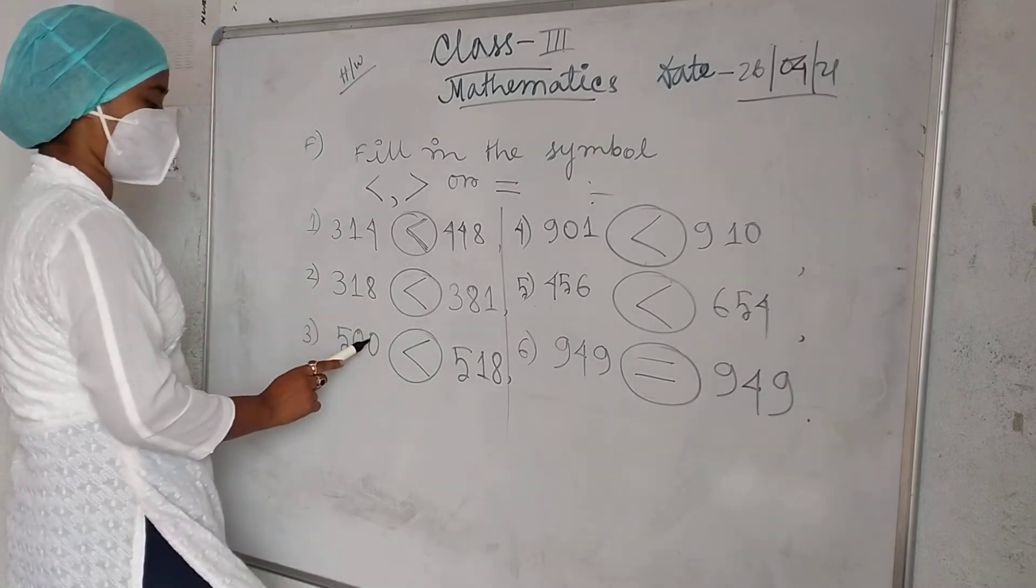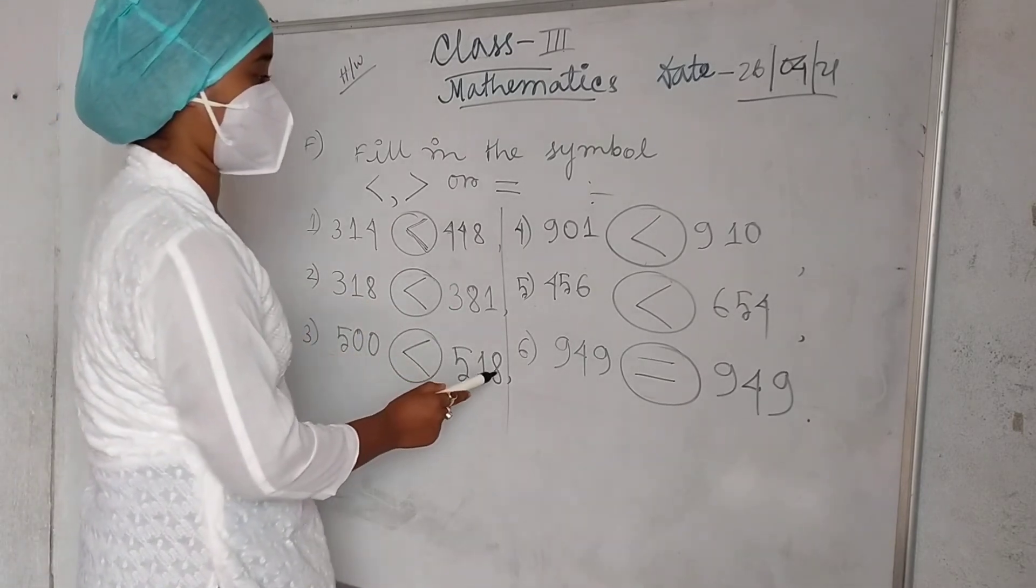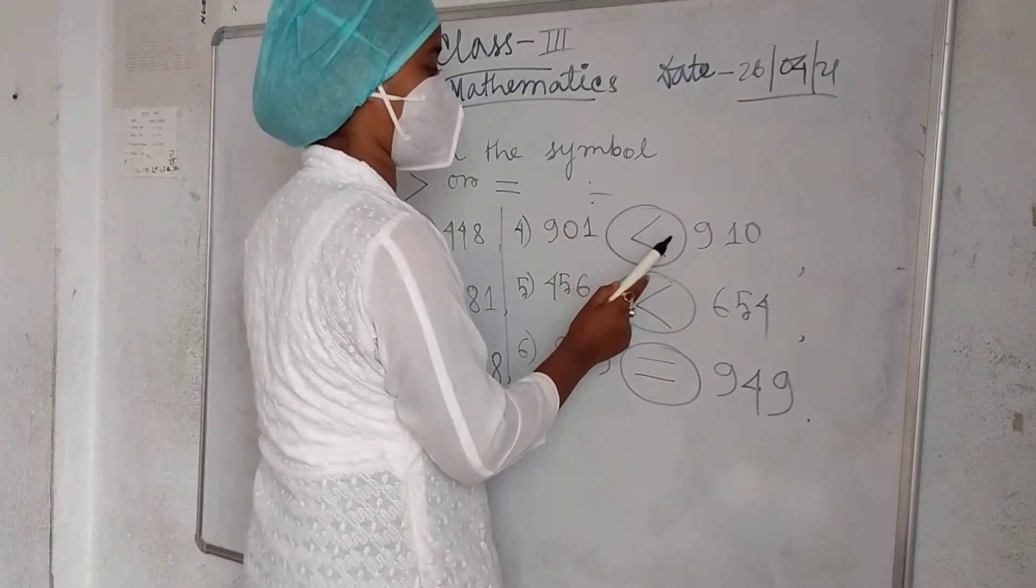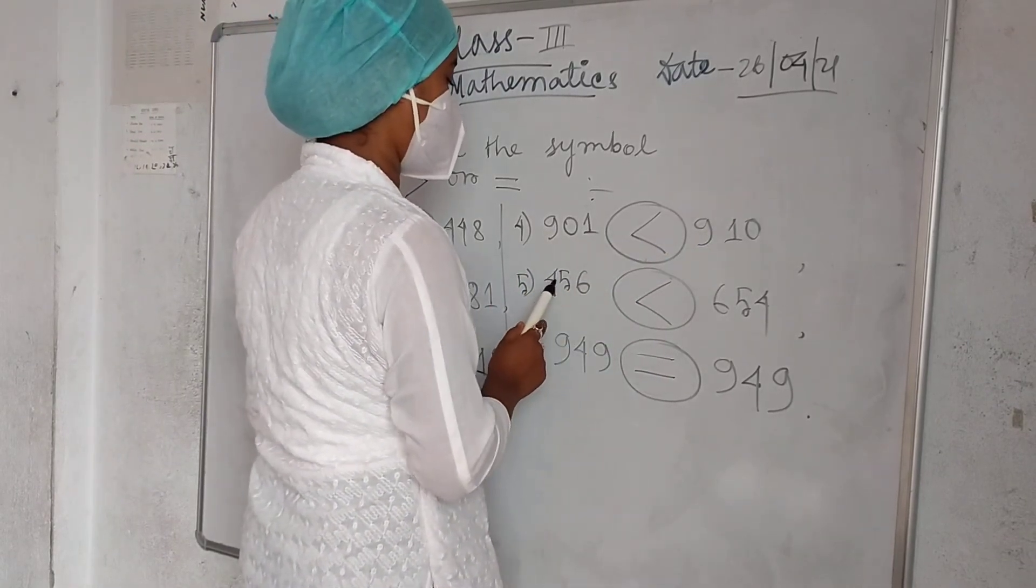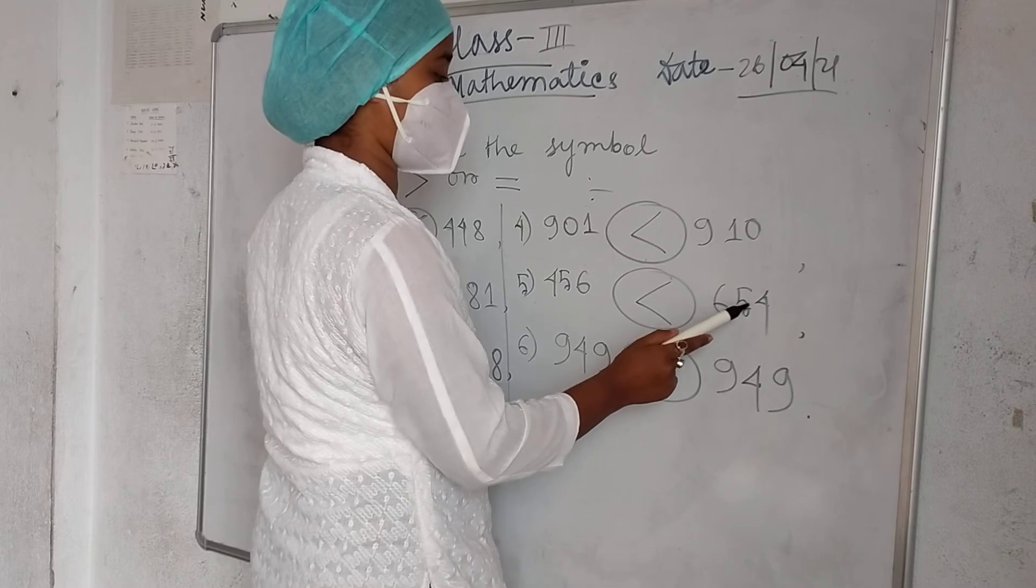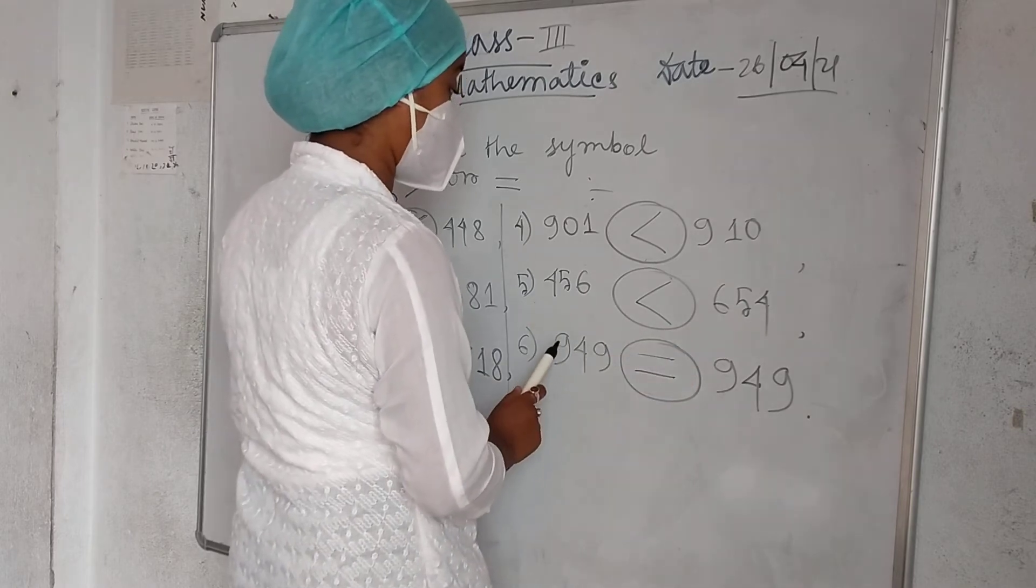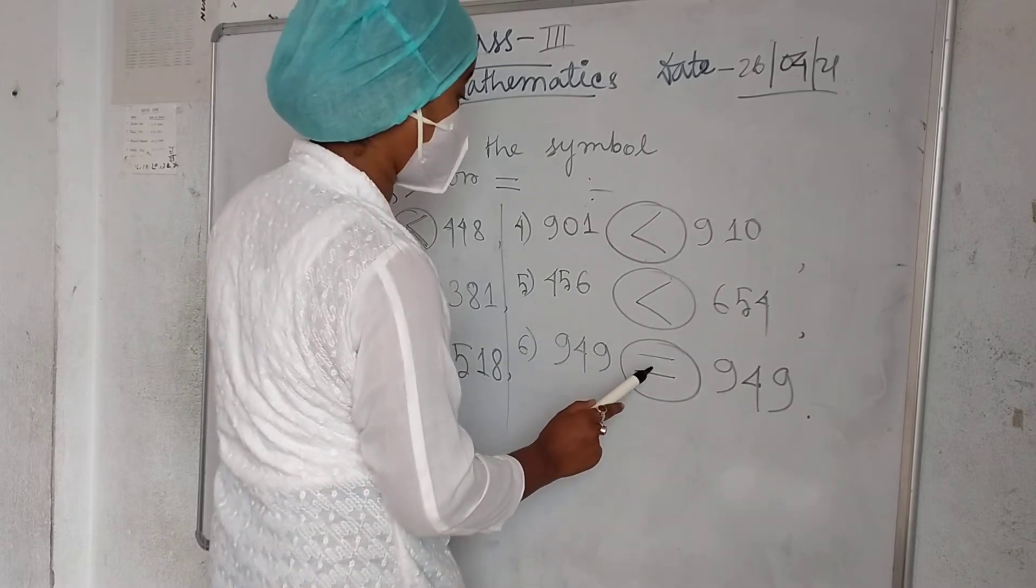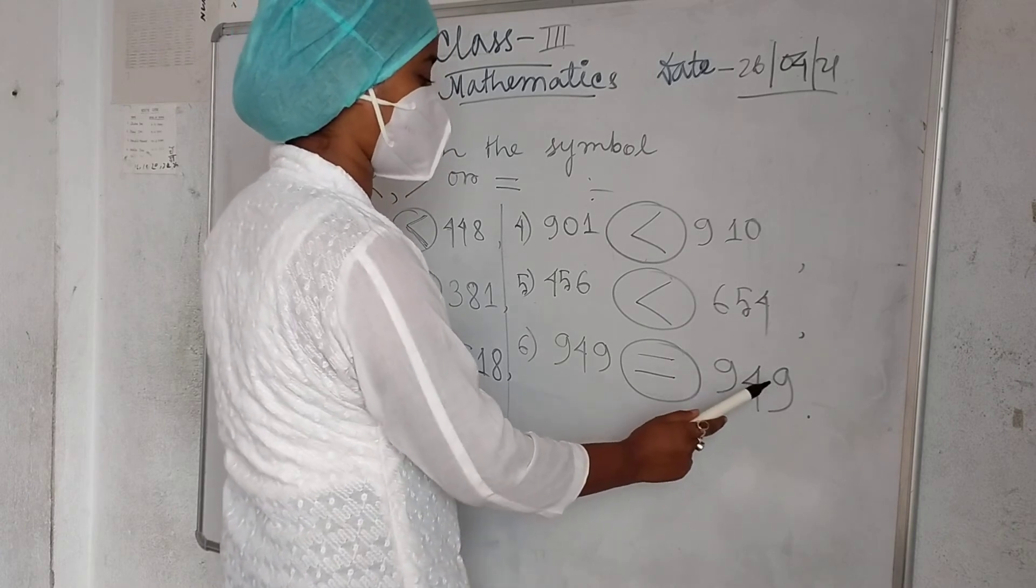I have a number. 500 less than 518, 901 less than 910, 456 less than 684. Then 949 equal to 949.